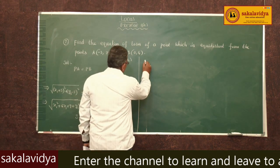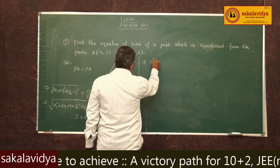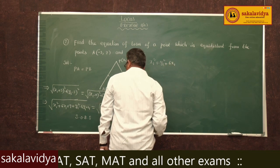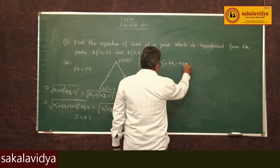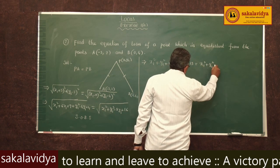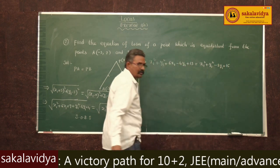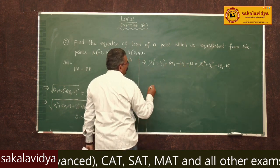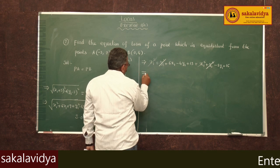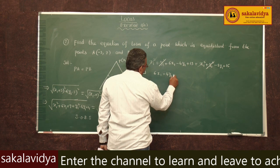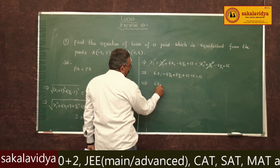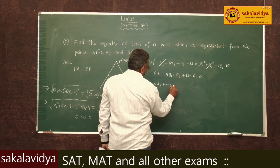We get x1 square plus y1 square plus 6x1 minus 4y1 plus 13 equals x1 square plus y1 square minus 8y1 plus 16. The x1 square terms cancel and the y1 square terms cancel. Bringing the right-side terms over: 6x1 minus 4y1 plus 8y1 plus 13 minus 16 equals 0. This gives 6x1 plus 4y1 minus 3 equals 0.